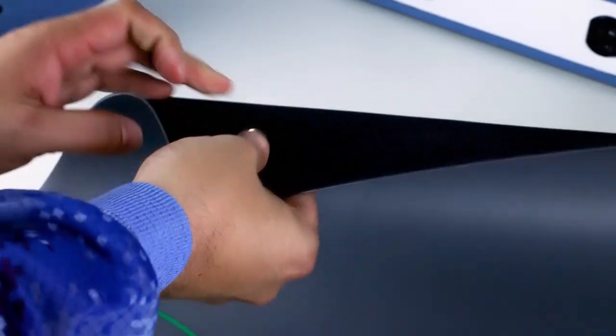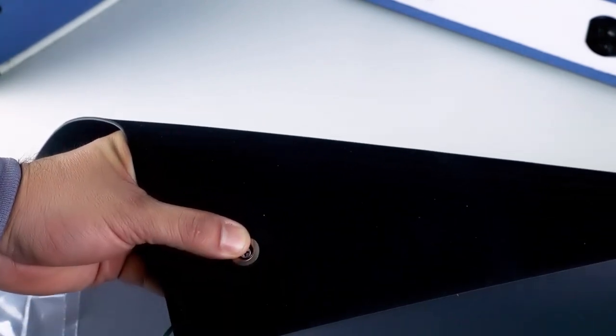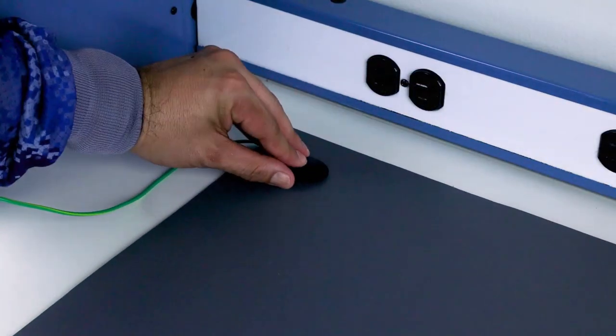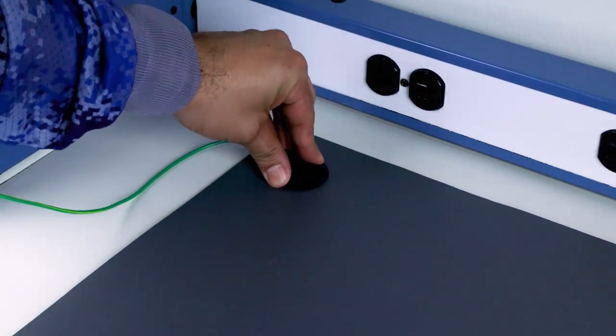The key to this is to make sure that it's secure so the conductive layer of the mat is being grounded. Once that's completed we make sure that it's on nice and tight, nice and firm.